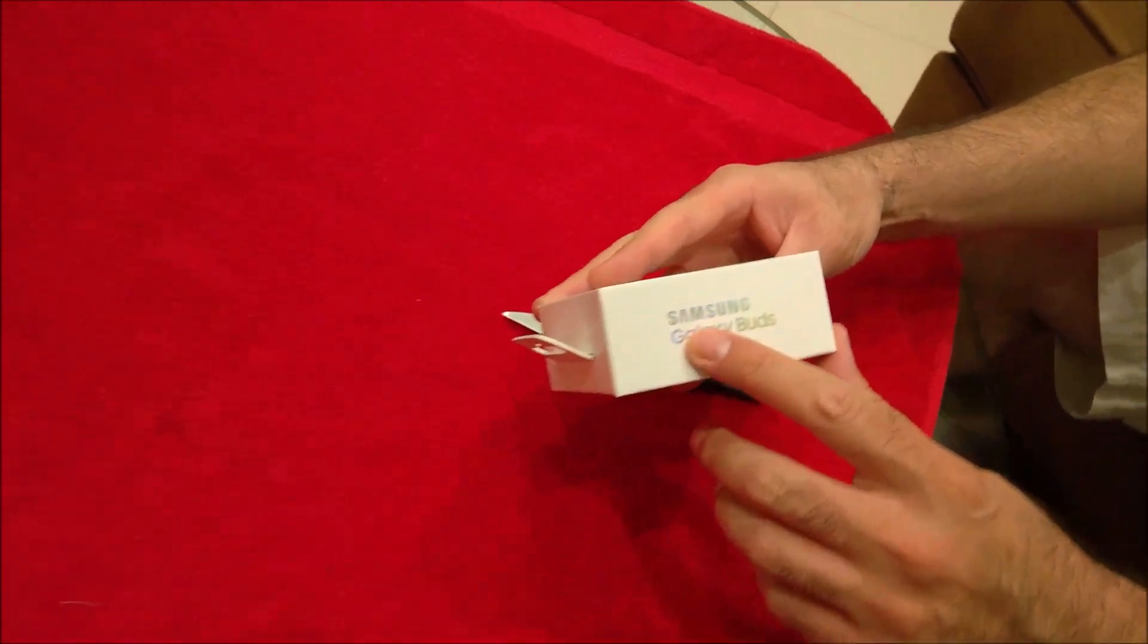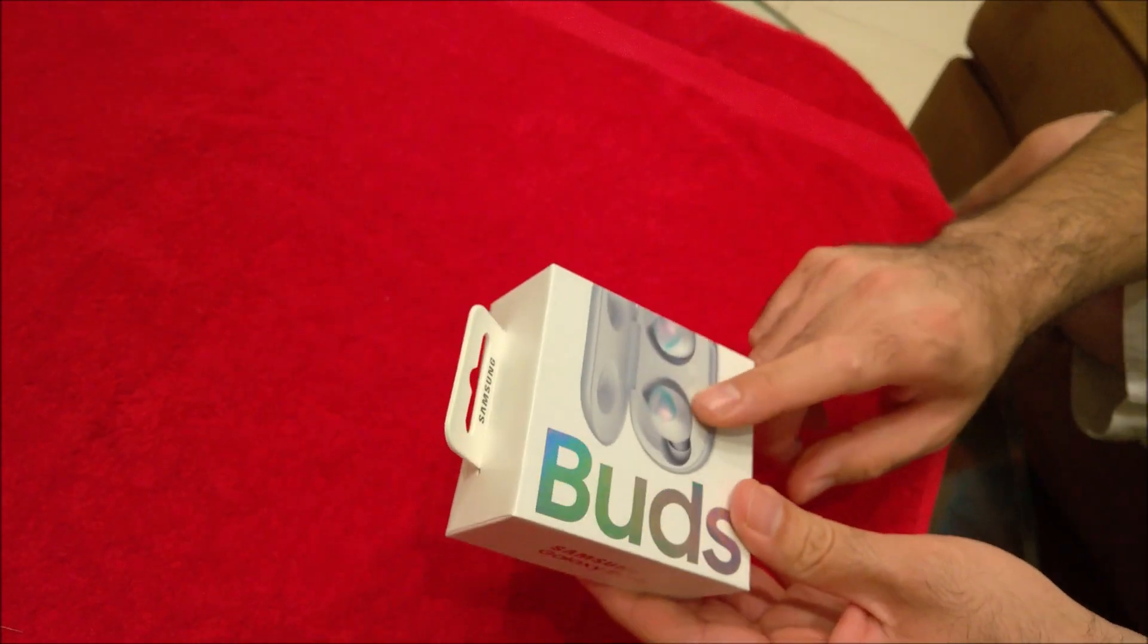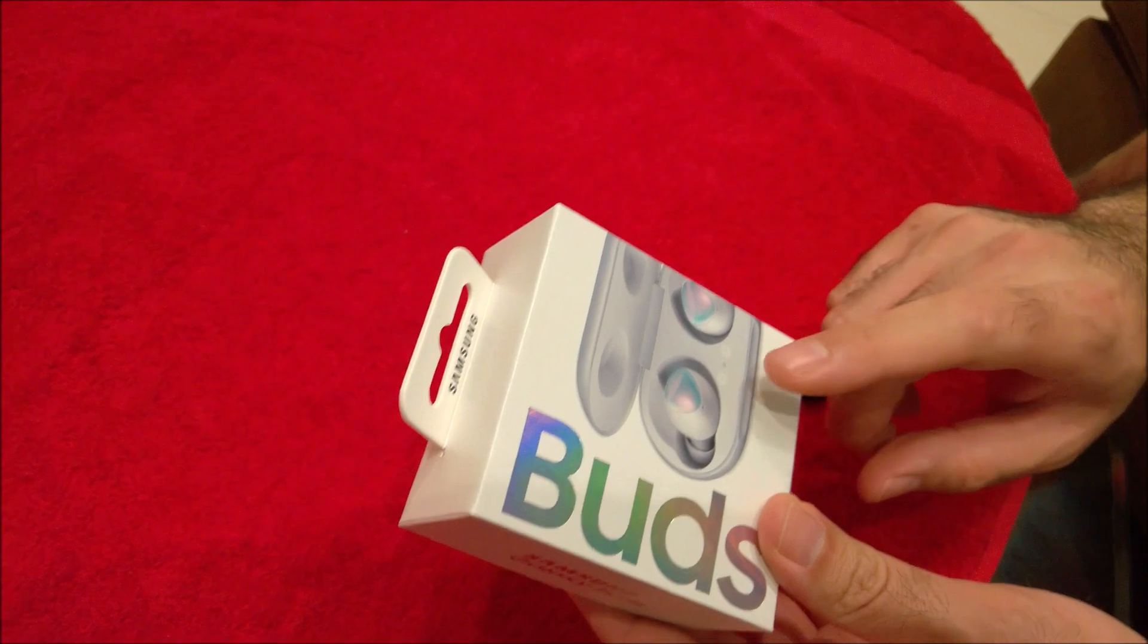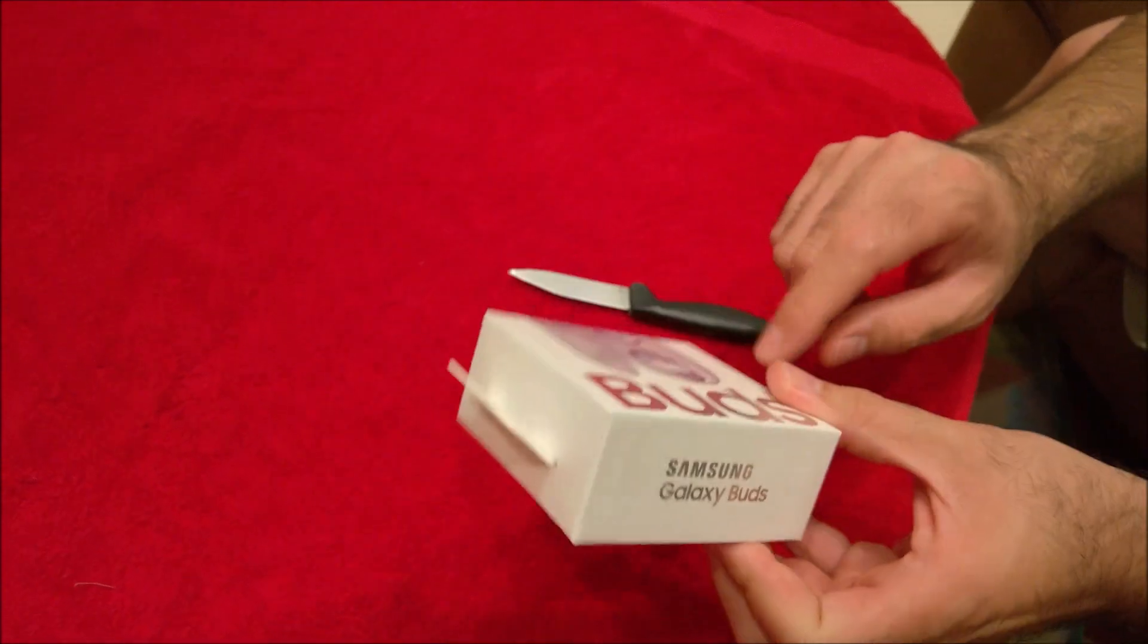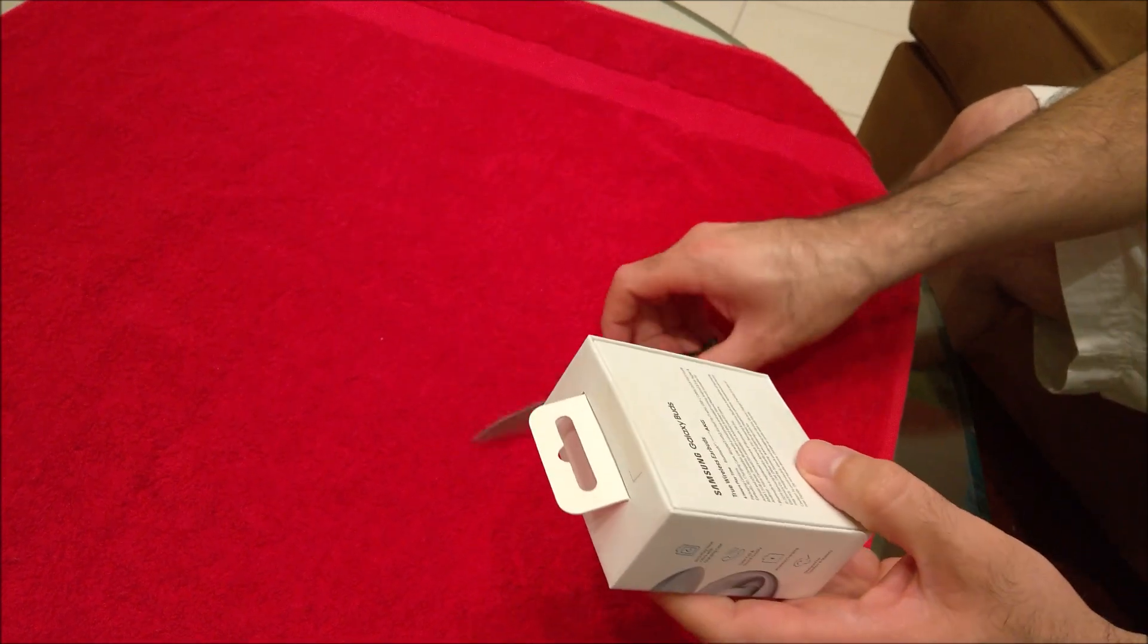An unboxing of a brand new Samsung Galaxy Buds. These are the silver ones. They do come in different colors - I believe black and white - these are the silver ones that I ordered. So let's see what comes inside the box.